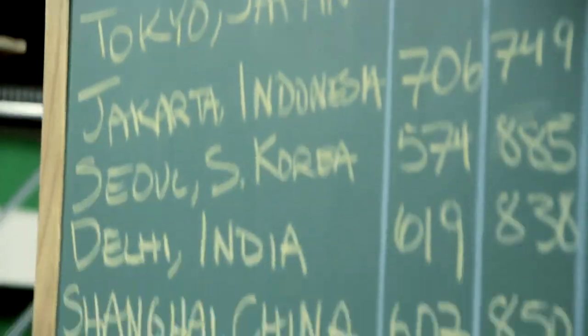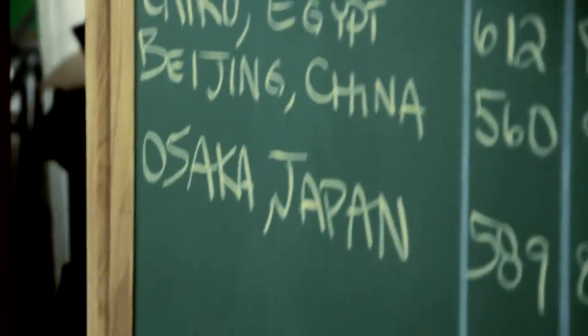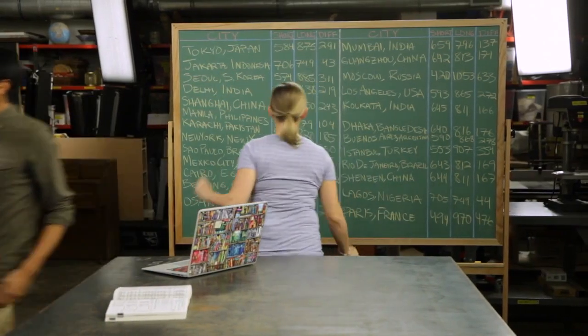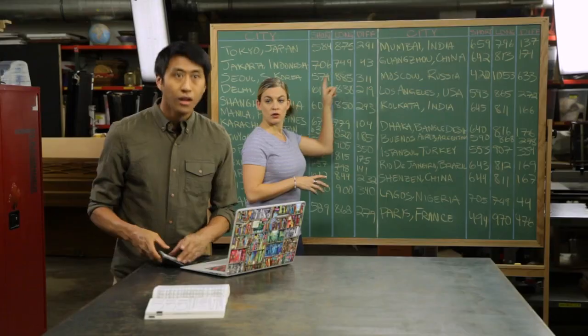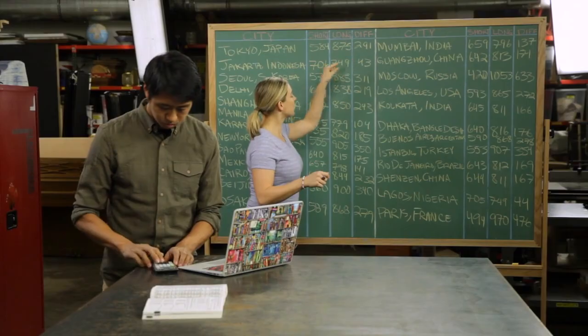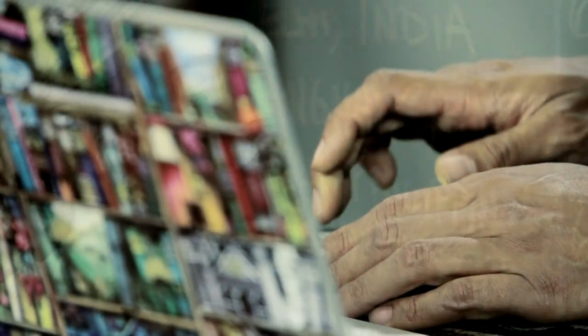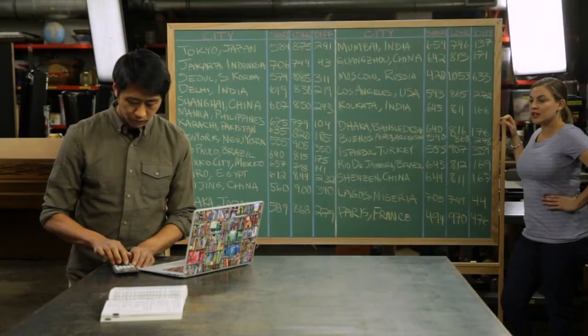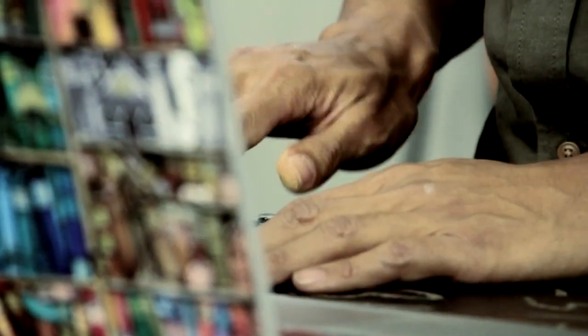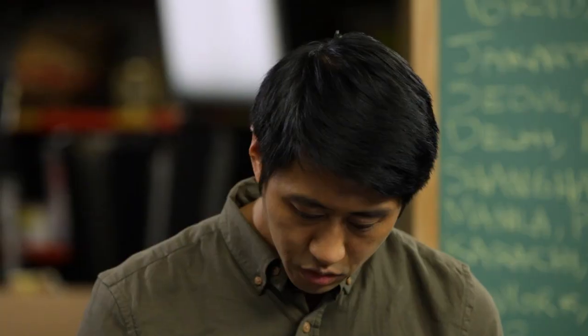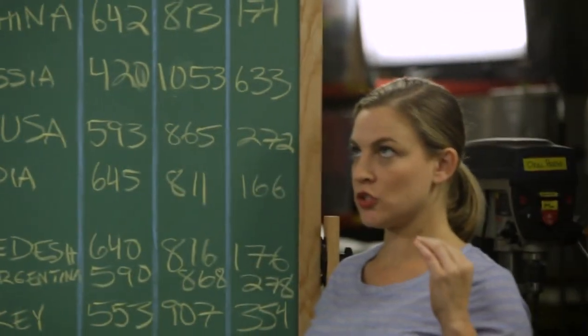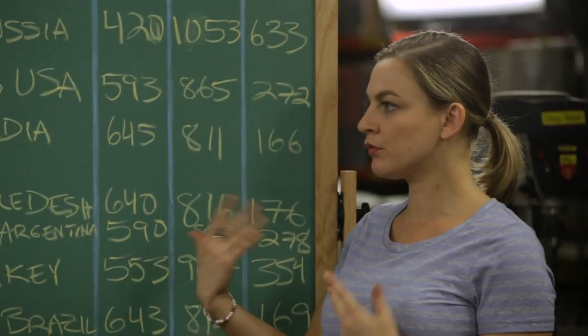All right, so we have all this data. Let's find the mean. Calculator. Okay, just give me all the numbers: 291, 43, 311, 167, 44, 44, and 476. And that gives us a mean of 238 minutes. So the average difference between the shortest day and the longest day is about four hours.